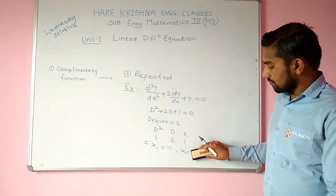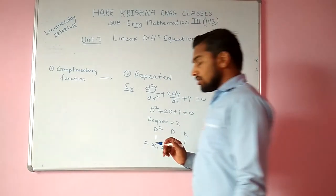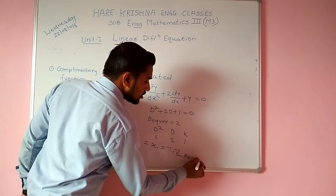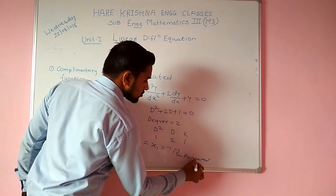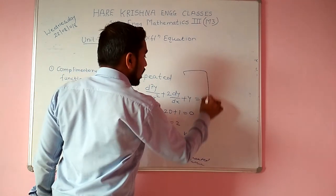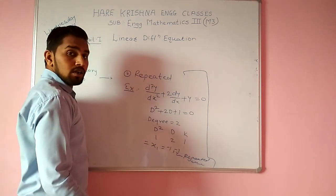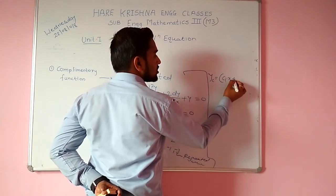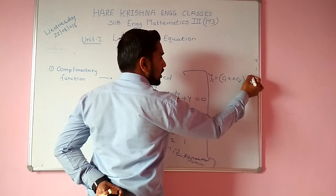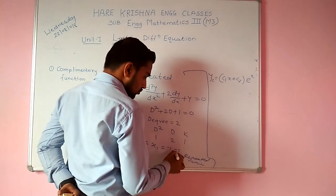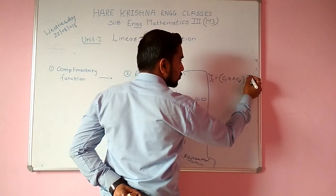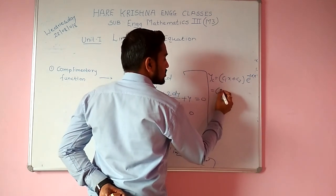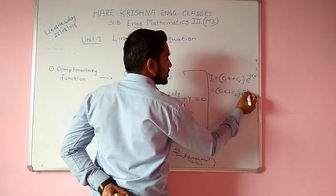This is a repeated method. The repeated values are: x1 = −1 and x2 = −1. Now I put those values into the standard equation. Yc = (c1·x + c2)·e^(−x), since we got minus 1 into x, giving e^(−x).